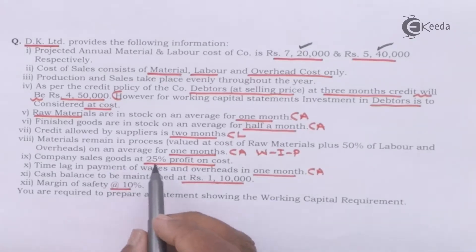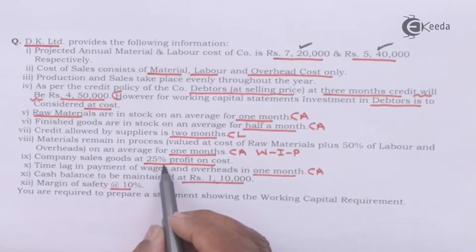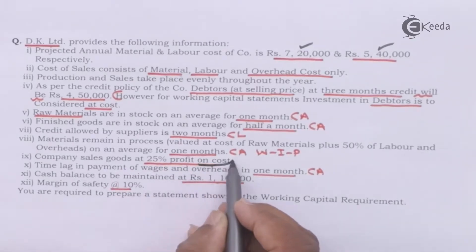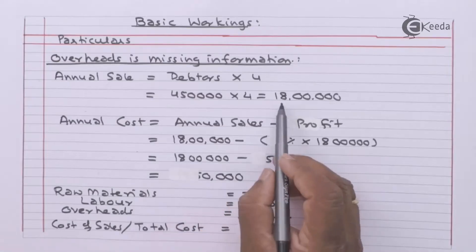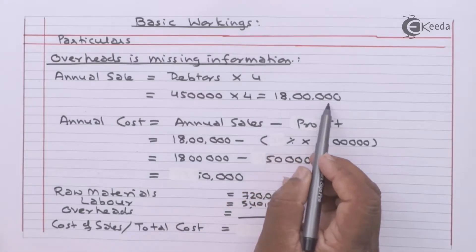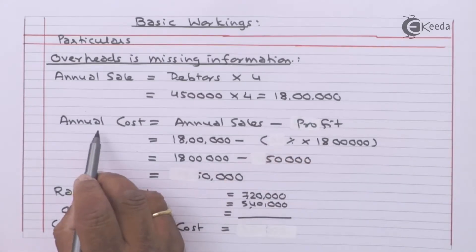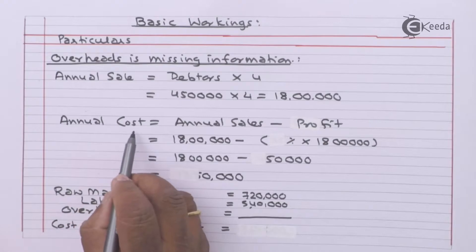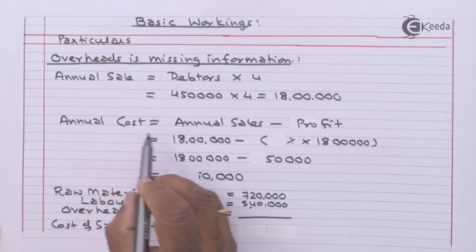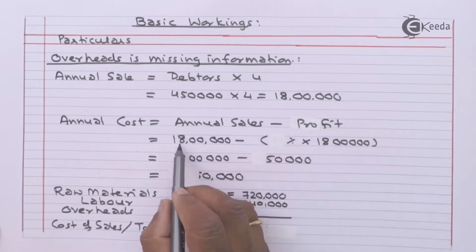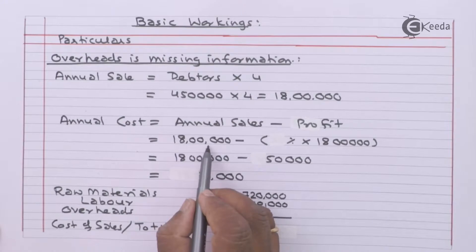The company sells goods at twenty-five percent profit on cost. We have calculated annual sales as eighteen lakhs. Annual cost is required to be calculated — that is annual sales minus profit. Annual sales is eighteen lakhs.